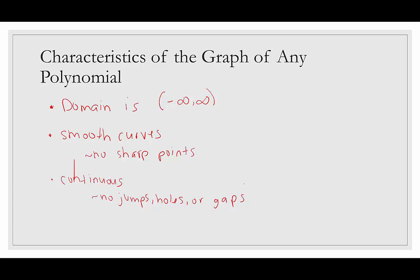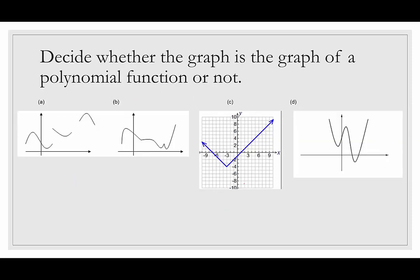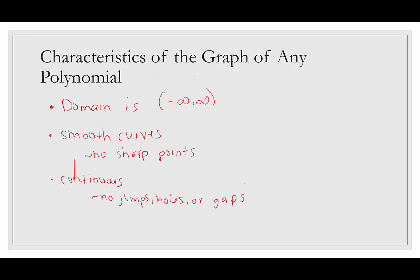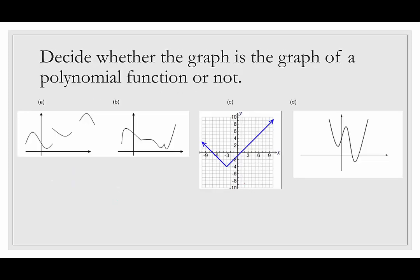Now let's decide whether each graph is a graph of a polynomial function based on these characteristics. In letter a, the graph has gaps — to get from one piece to another you would have to lift your pencil off the page. Because polynomial functions must be continuous, this is not a polynomial function.